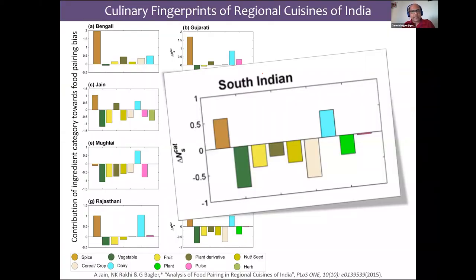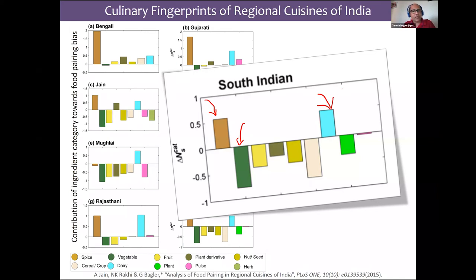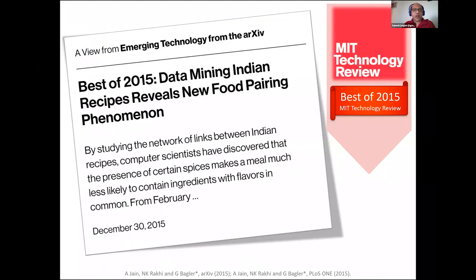Culinary fingerprints tell us the role of each ingredient category — spices, vegetables, dairy products — in contributing to the food pairing index. This is illustrated for South Indian cuisine. All of this research from 2015 received considerable press and academic recognition — it was identified as best of 2015 and highlighted as an emerging technology by MIT Technology Review. More than 200 media outlets, including writers like Veer Sanghvi, highlighted our work as the future of food.